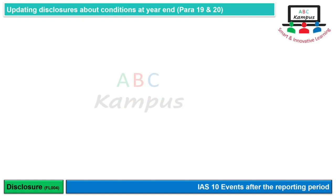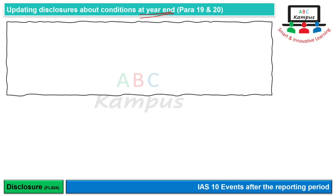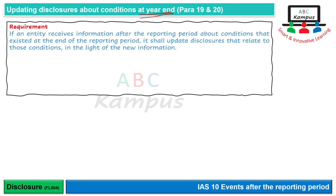Next है updating disclosures about conditions at year end, which means adjusting events के बारे में जो disclosures हैं उनको update करना। Requirement इसमें क्या है: if an entity receives information after the reporting period about conditions that existed at the end of the reporting period, यानि adjusting event, it shall update disclosures that relate to those conditions in the light of new information.